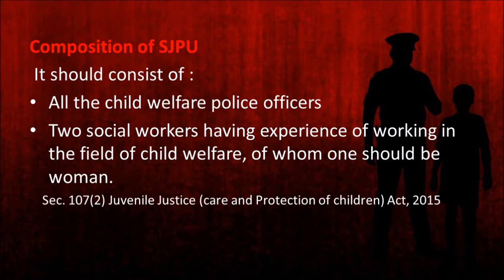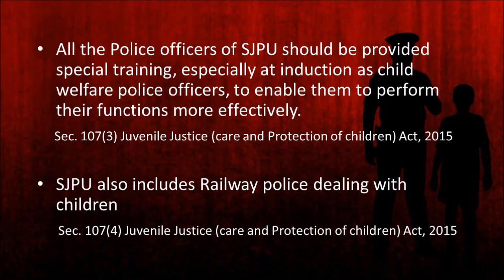The Special Juvenile Police Unit should consist of all the child welfare police officers designated under Section 107 subsection 1 of the Juvenile Justice Act of 2015. In addition, it should consist of two social workers having experience of working in the field of child welfare, and out of these two social workers, one must compulsorily be a woman. All police officers of the Special Juvenile Police Unit should be given special training, particularly at induction as child welfare police officers, to enable them to perform their functions more effectively. The Special Juvenile Police Unit also includes railway police who are dealing with children.